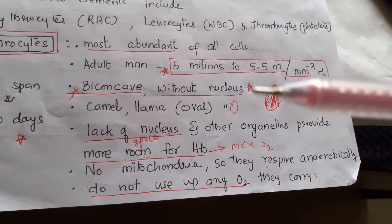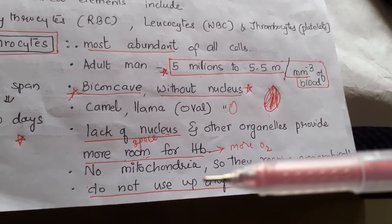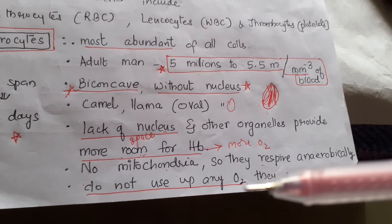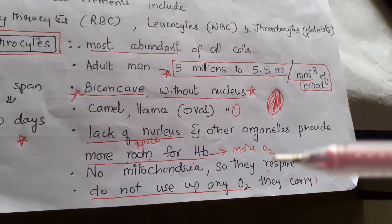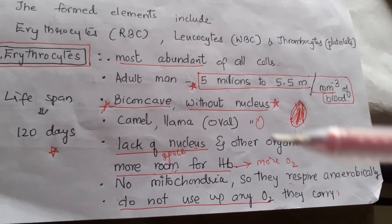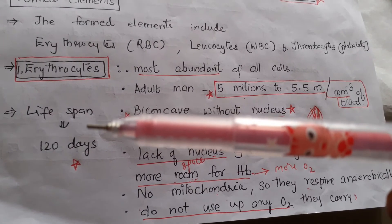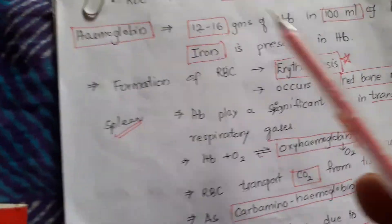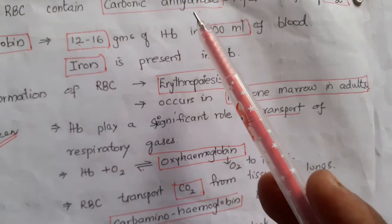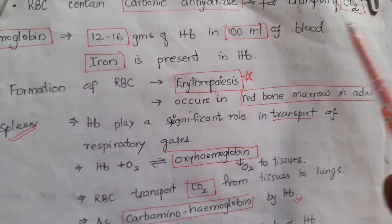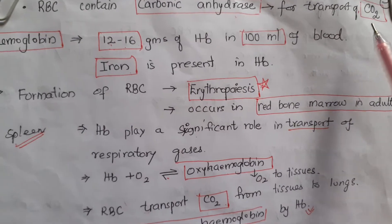There are no mitochondria, so even though RBCs carry oxygen, they respire anaerobically and do not use up the oxygen. The lifespan of erythrocytes is about 120 days. RBCs contain the carbonic anhydrase enzyme, which is helpful for the transportation of carbon dioxide.